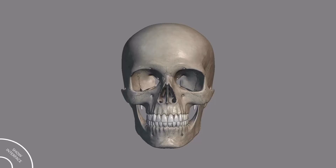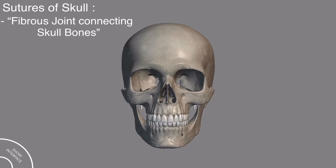In this video, we will discuss the sutures of the skull. The sutures of the skull are the fibrous joints connecting the bones of the skull. We will discuss all the sutures of the skull except the orbital sutures, which we will discuss in a separate video.